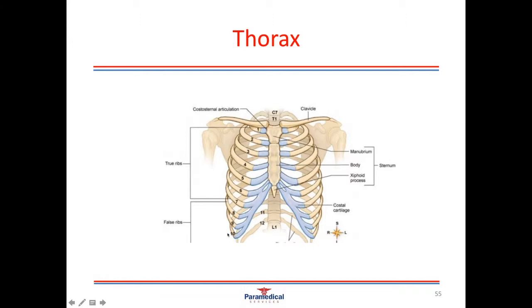Moving on down to the thorax, the breastbone on the chest is called the sternum and the sternum is divided into three parts: the manubrium, which is the very top part; the body of the sternum; and the xiphoid process. Running off parts of the sternum and connected by cartilage are the 12 ribs. Two of these ribs, however, are not connected to the sternum — they're called floating ribs, that's rib 11 and 12. But every single rib is connected onto a thoracic vertebra at the back, helping to enclose and create the thoracic cavity.